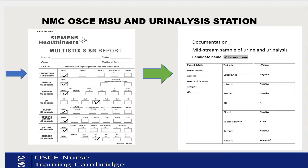Regarding documentation, there are two formats used by test centres. Some use the company's pre-printed paperwork where you simply tick boxes. Others — including those using the NMC's recently published supporting document — require you to manually write your results as you perform the analysis. For glucose, make sure you write values in millimoles, as that is the unit used in the UK, and ensure results are correctly transferred from the container chart.